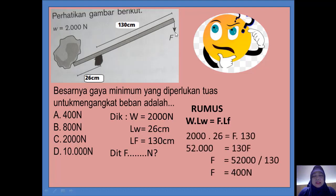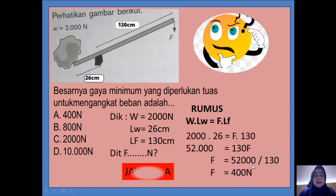Kita hitung. W-nya 2000, LW-nya 26, F-nya dicari, LF-nya 130. Jadi hasilnya 52.000 sama dengan 130F. F-nya kuasa berarti 52.000 dibagi 130. Jawabannya adalah 400 Newton. Jadi jawabannya adalah yang A. Gampang kan?